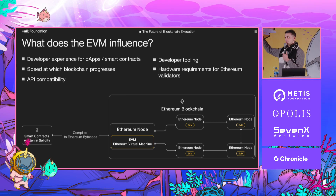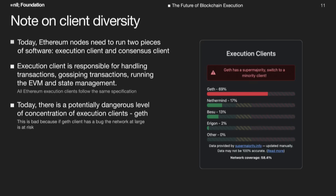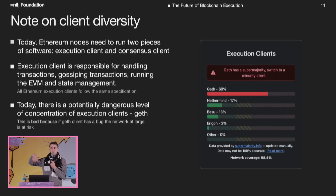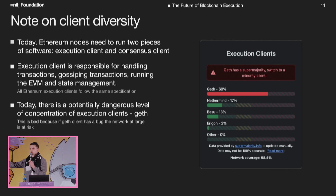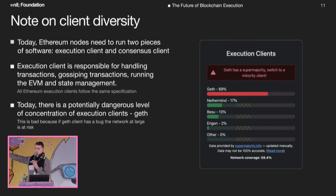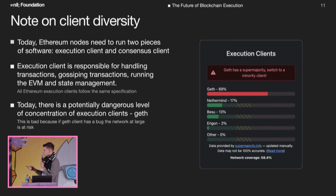The EVM also impacts hardware requirements, in particular for Ethereum validators. As a side note on client diversity — a hot topic as of late — you may have heard of concerns about execution client concentration risk around Geth. The Ethereum node is split into two clients: execution and consensus. Execution is responsible for running the EVM. Right now, around 64% of execution clients run Geth. The risk here is if Geth has a bug or vulnerability, the network at large is at risk.